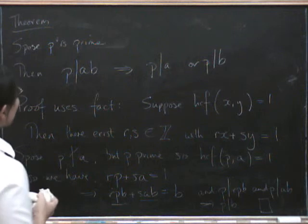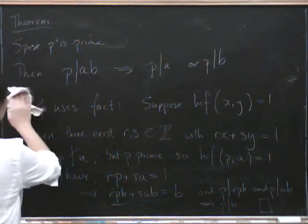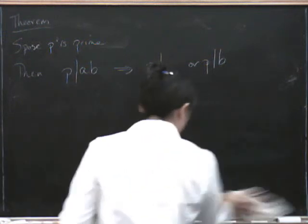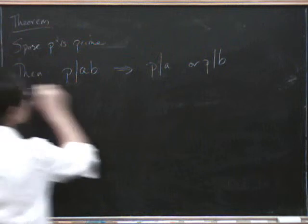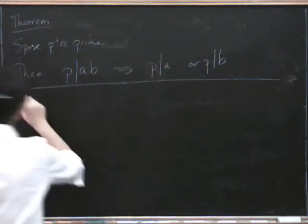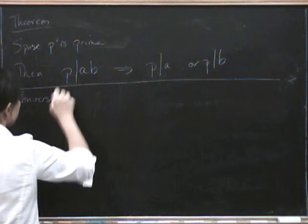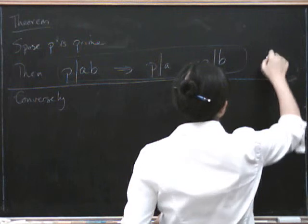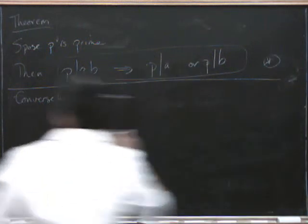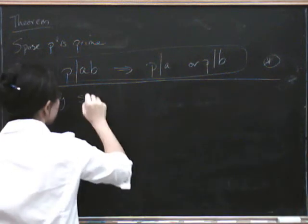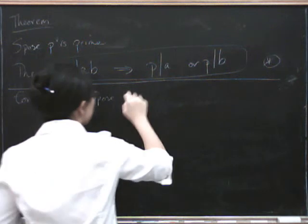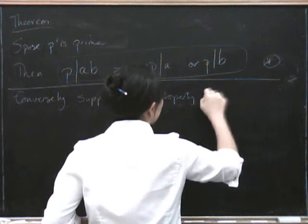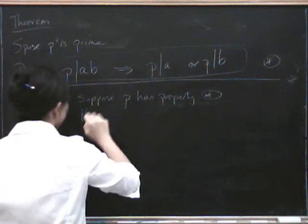So there is a converse to this theorem. Conversely, let's call this property star. Suppose p has the property star, then p is prime.